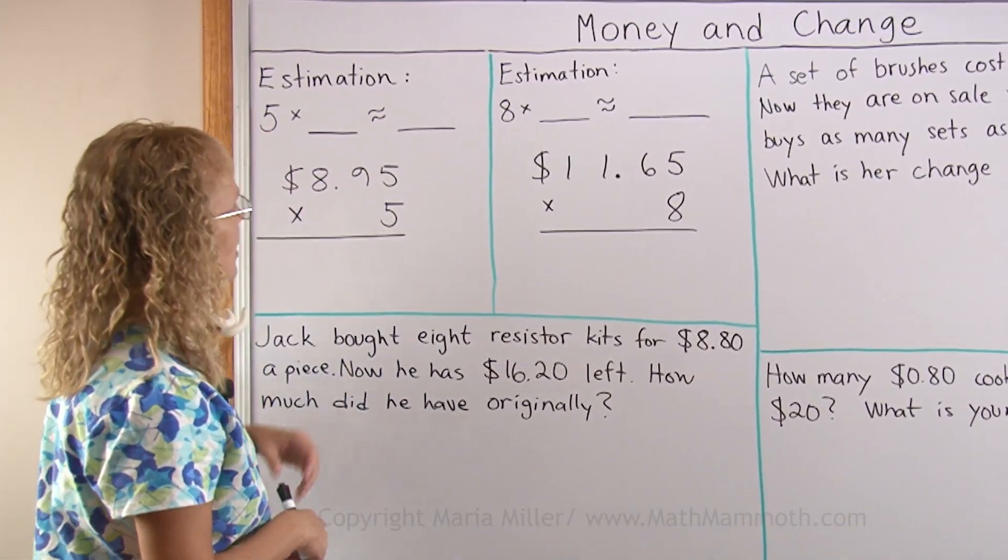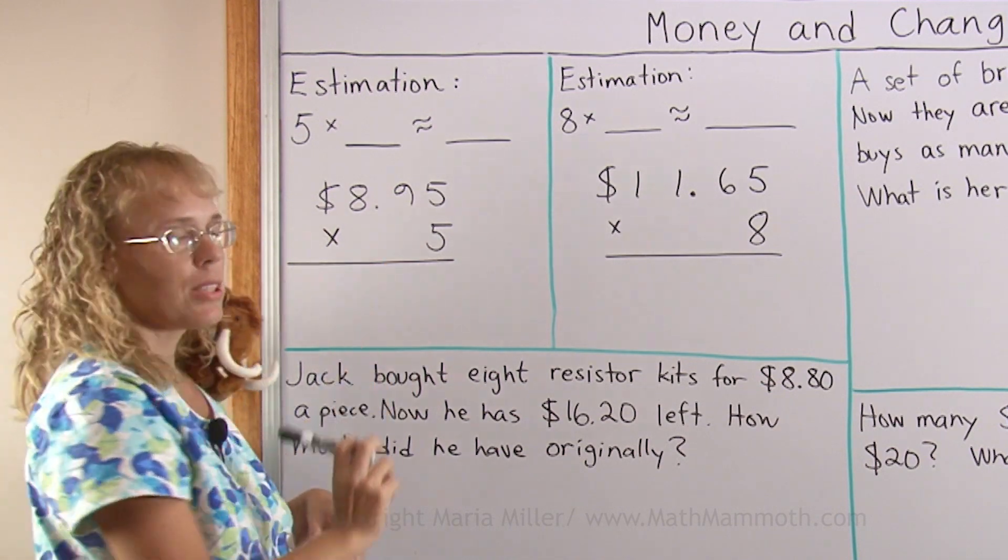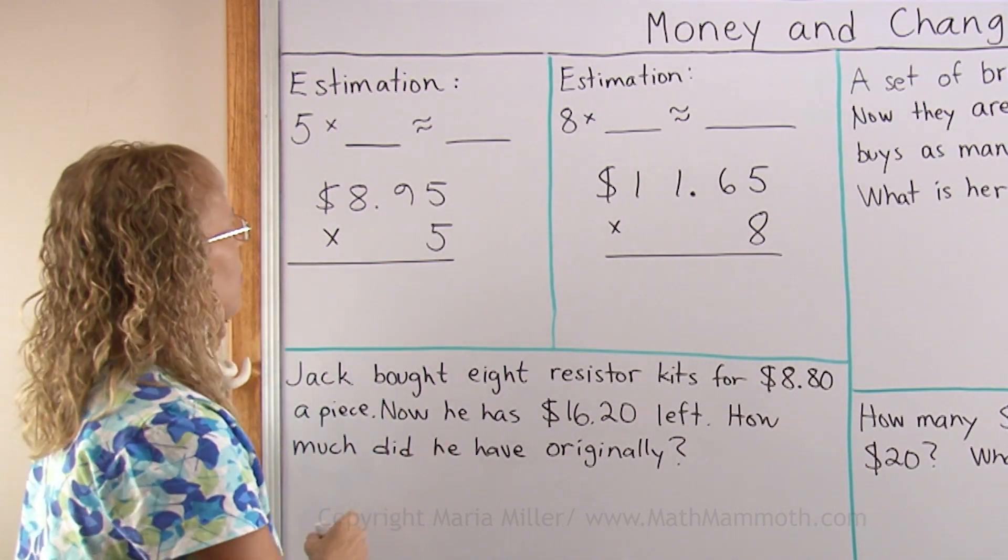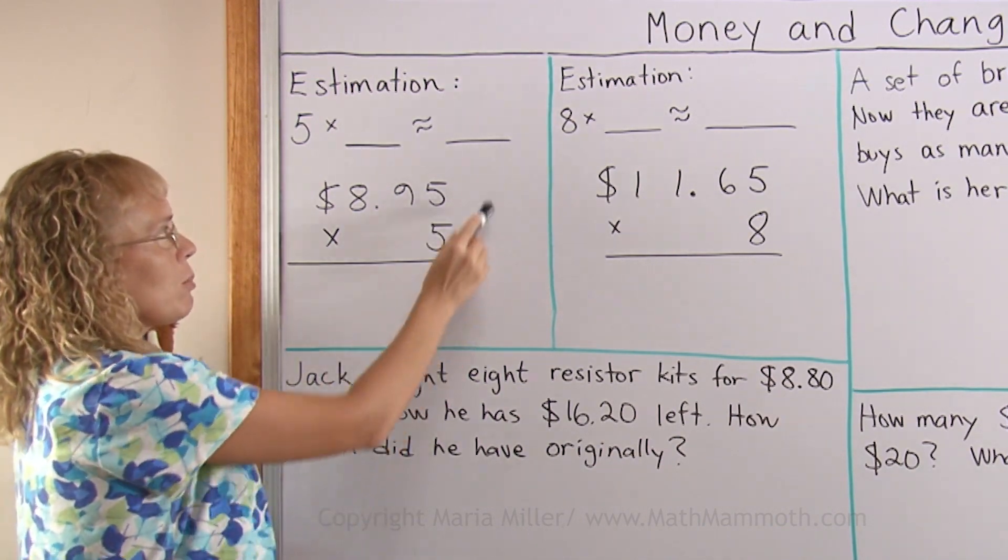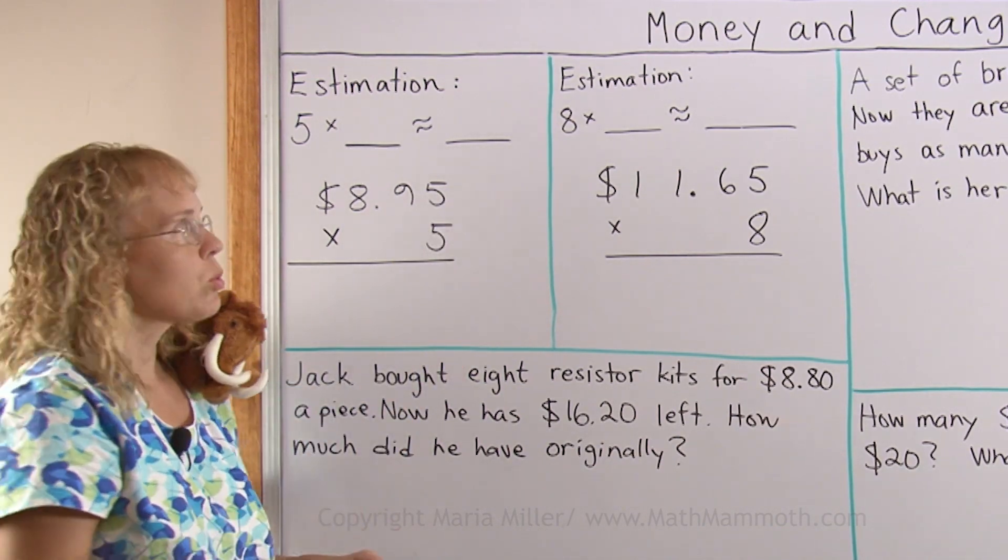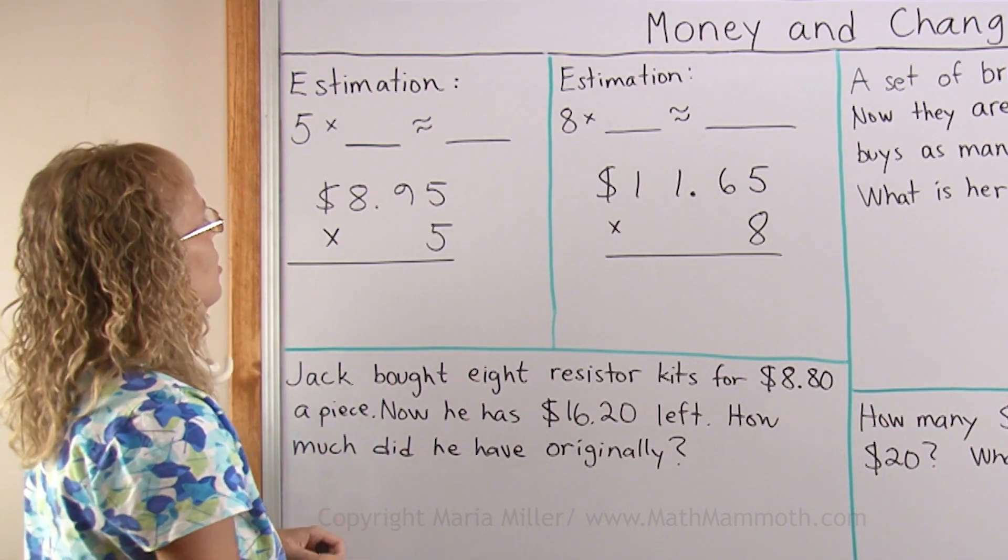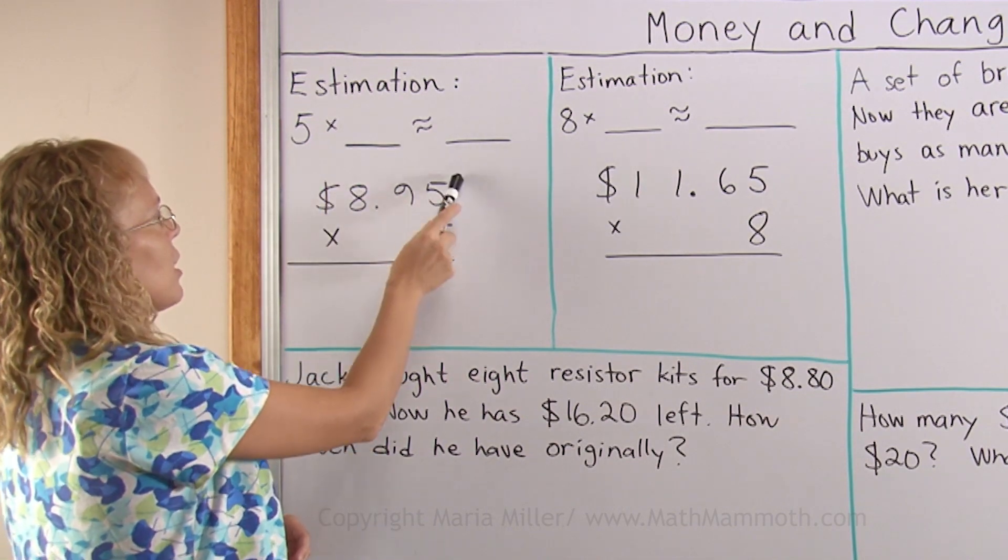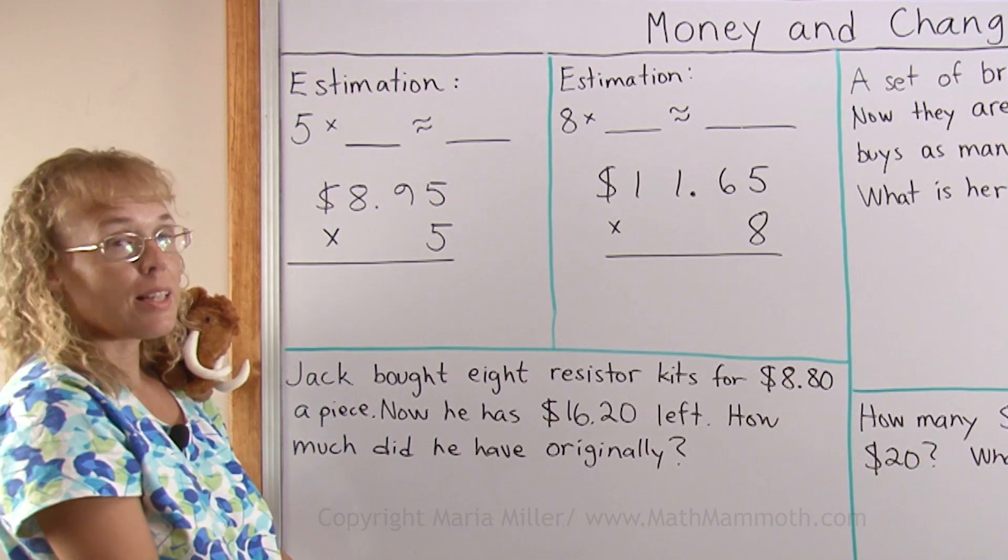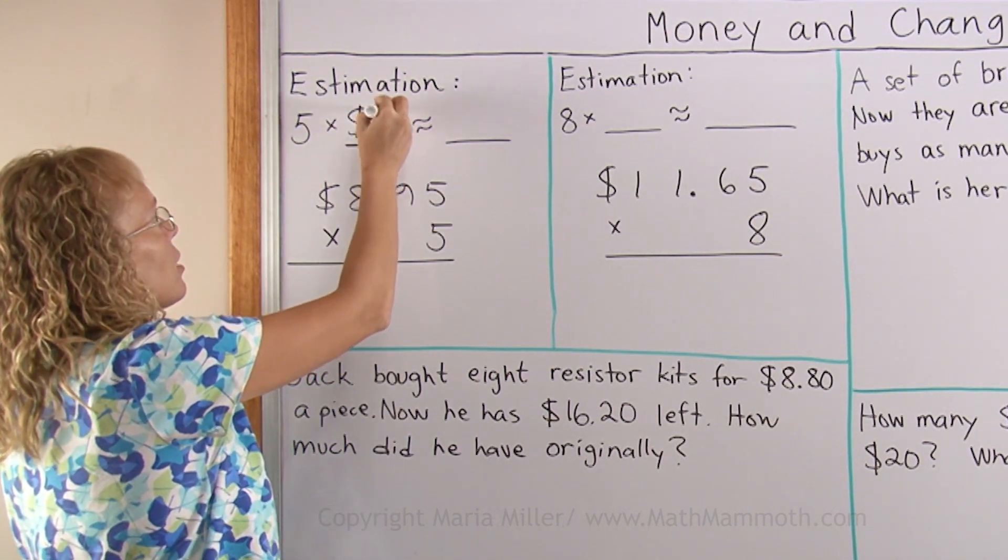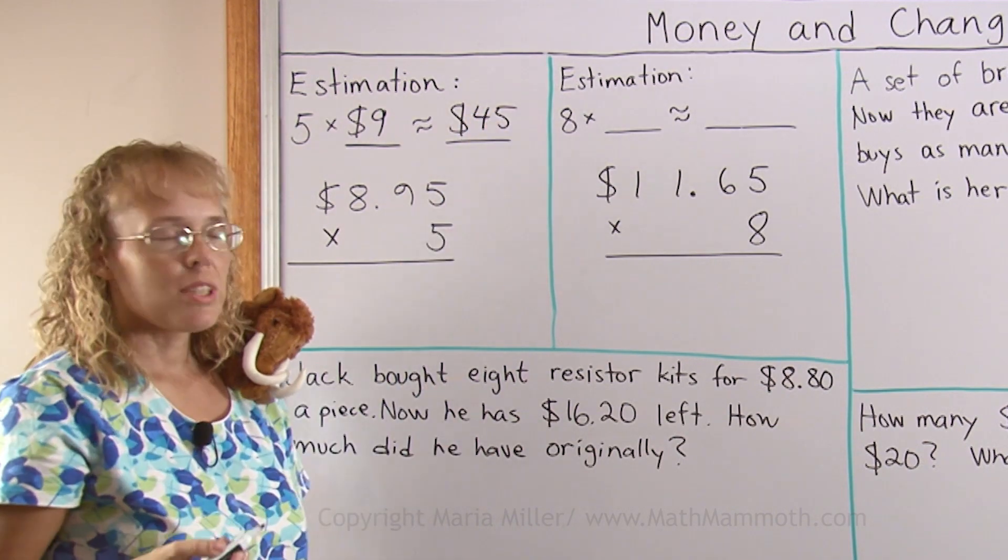First, let's just multiply with money. If I have to multiply $8.95 times 5, first I might want to estimate the results so that when I get my final answer I can compare this to my estimation and check that they are close. That can help me catch errors, gross errors in the multiplication. To estimate I would go 5 times and then round this to some close by number that I can multiply mentally, and of course that would be $9. 5 times $9 which is $45 and now we will start multiplying.